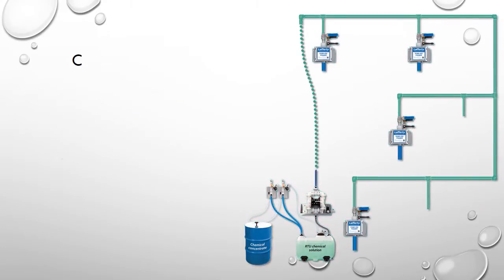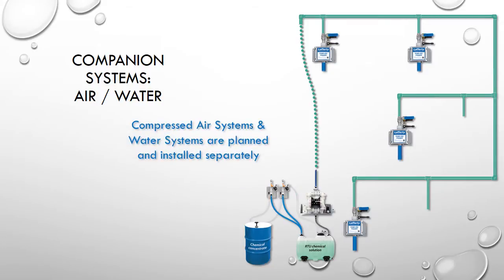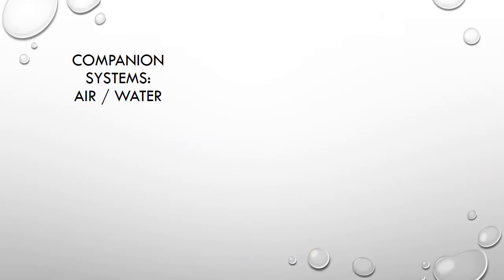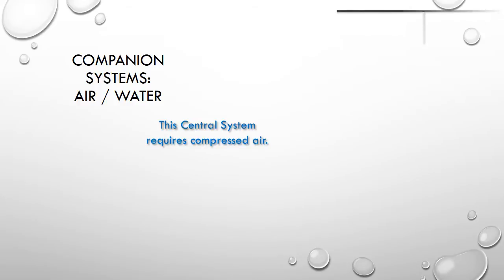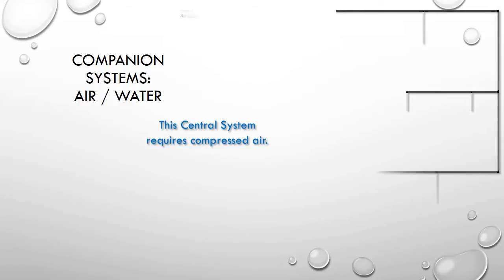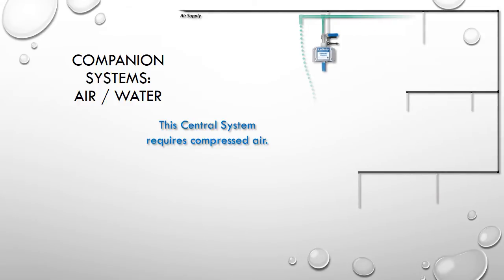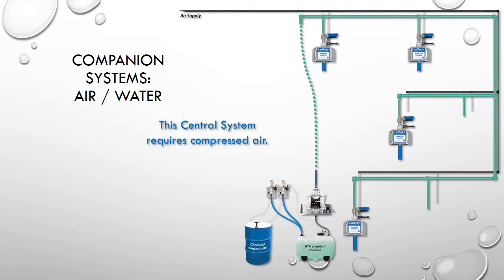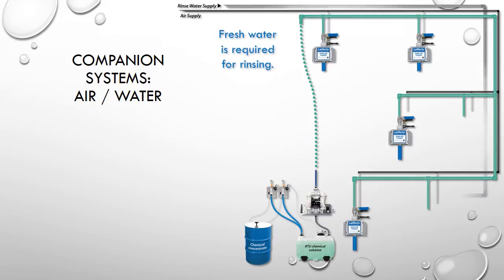Central systems often have companion or parallel systems in place to provide compressed air or water as needed. In this example, the pump, the dilution system, and the foamers require compressed air, so a separate air supply line is installed. Likewise, water lines may be installed to provide rinsing capability.